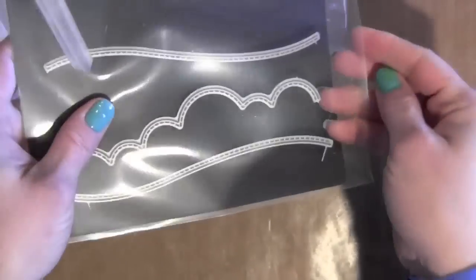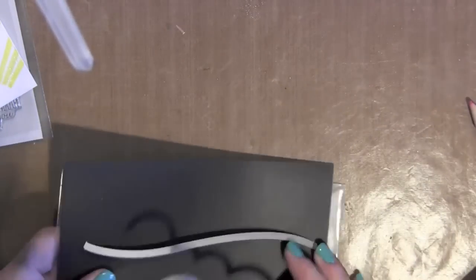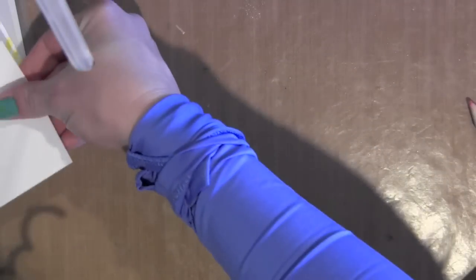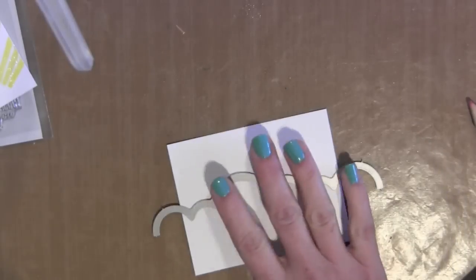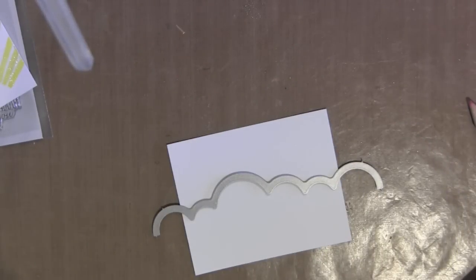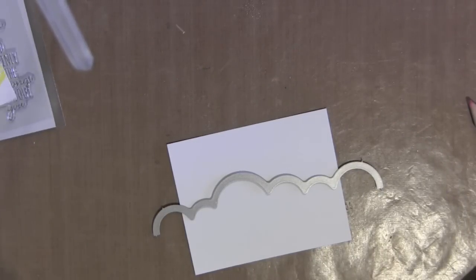Next I am going to take the Landscape Trio and this is a really great new die set from Mama Elephant that has this cloud border and then a couple of wavy borders that are perfect for landscapes and all kinds of different things. But I am going to use just the cloud border for this card.